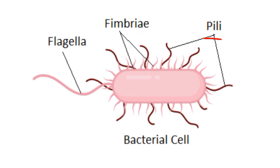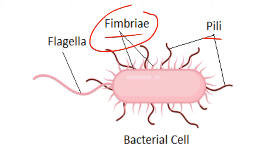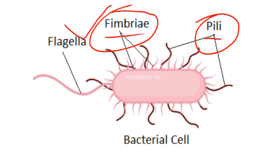Pili are made up of a protein called pilin while fimbriae are made up of a protein called fimbrillin. Fimbriae are present in both gram-positive and gram-negative bacteria, while pili are present mostly in gram-negative bacteria. The gene for fimbriae is located in the bacterial chromosome, while the gene for pili is located in the plasmid. That was all about the structural differences.